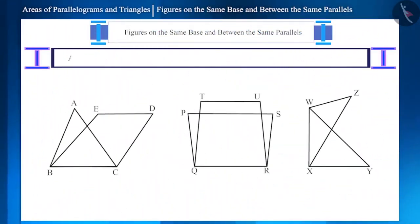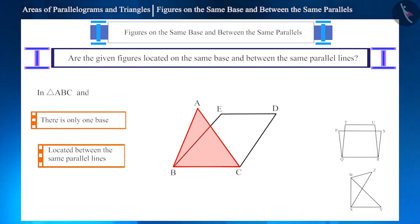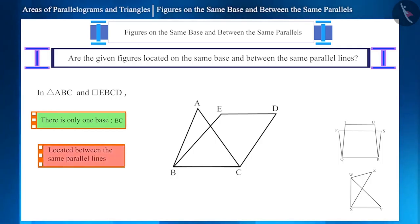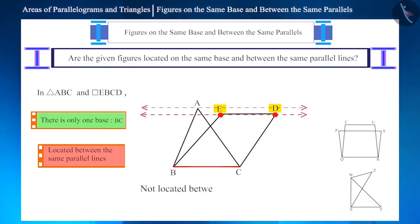Let's verify whether the figures on the screen are located on the same base and between the same parallel lines. In the first figure, in triangle ABC and parallelogram EBCD, side BC is the common side — both figures have the same base BC. But these figures are not located between the same set of parallel lines, because vertex A of triangle ABC and vertices E and D of parallelogram EBCD are not placed on the same line. Therefore, their heights are not equal.